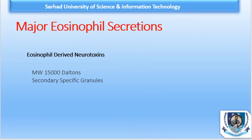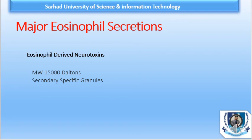Eosinophil-Derived Neurotoxin may have similar function against helminth parasites. To summarize the important secretory materials of eosinophil: CLC (lysophospholipase, MW 26,000) attacks plasma membrane; Eosinophil Peroxidase has the same activity as myeloperoxidase and plays an important role in killing parasites; Eosinophilic Cationic Protein counteracts anticoagulant activity by binding heparin.